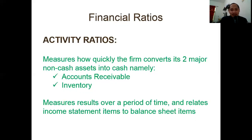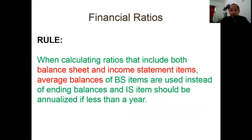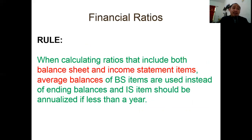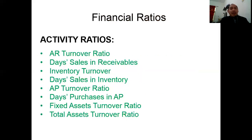Here is the rule in calculating ratios: you include both balance sheet and income statement items, but always remember to use average balances for balance sheet items rather than the ending balance. Income statement figures should be annualized if less than a year. Always remember this rule — students often make the mistake of knowing the formula but forgetting to compute the average and just taking the ending balance, which is wrong.